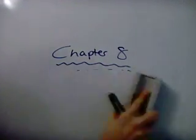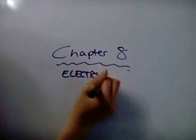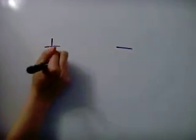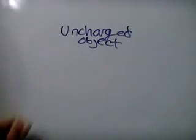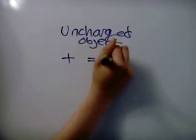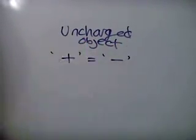Chapter eight on electric charge. There are two types of electrical charge: positive and negative. An uncharged object contains an equal number of positive and negative charges.